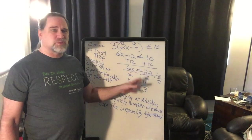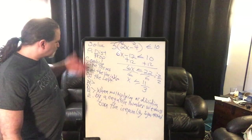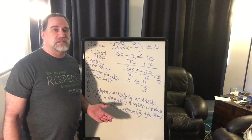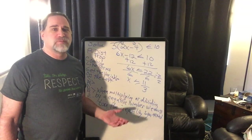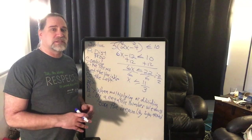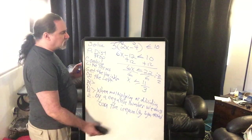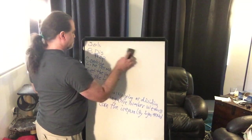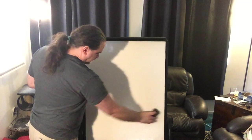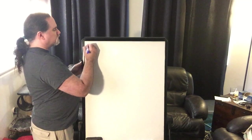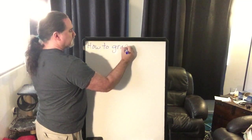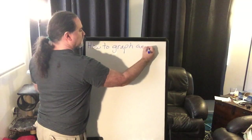That's solving two- and three-step inequalities. If you wanted to go to four or five steps, it's really not a big deal — it's stuff we've already done. It doesn't add any level of difficulty. So let's get to the heart of this lesson: how to graph an inequality.